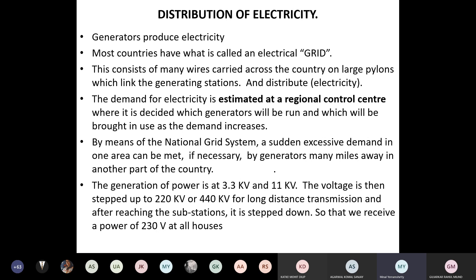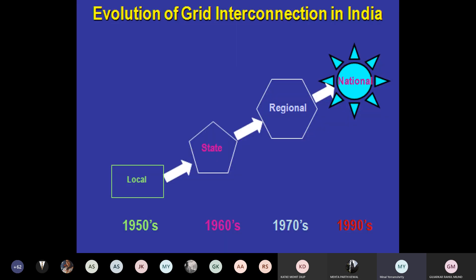The distribution at city level is now clear. India evolved from local generators to state, regional, and now national grid. The thermal plant at Dahanu, run by Reliance, supplies electricity to Bombay — about three hours away by train. The grid covers huge radii and supplies entire regions.